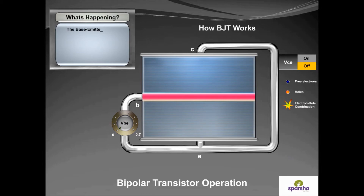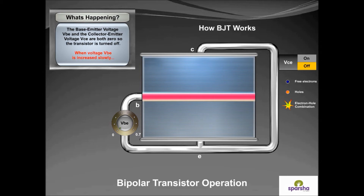The base-emitter voltage VBE and the collector-emitter voltage VCE are both zero, so the transistor is turned off. See what happens when voltage VBE is increased slowly.